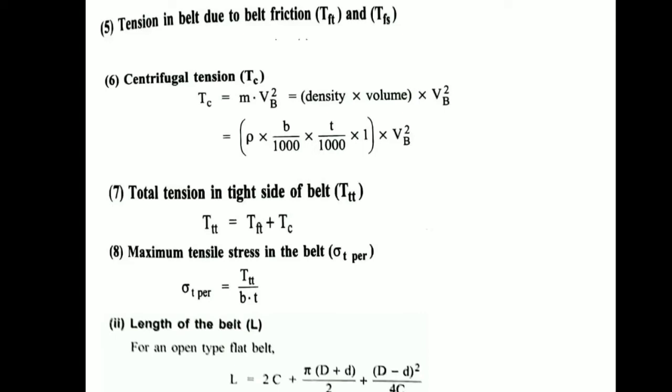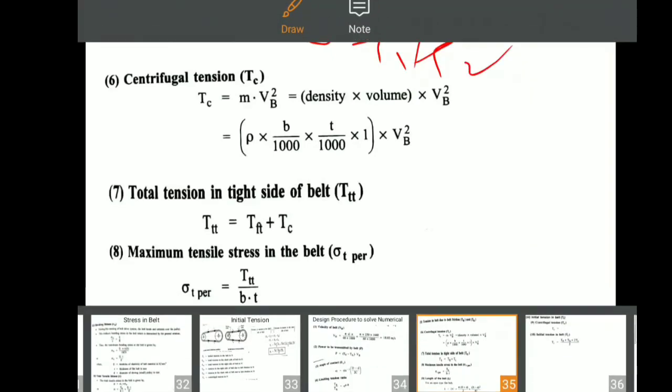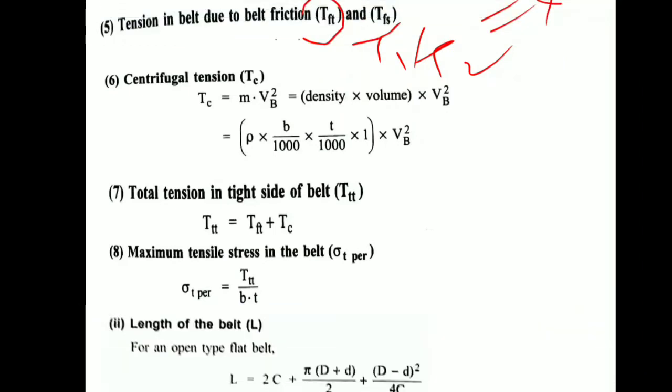So this is belt tension. Next will be the centrifugal tension which we have seen: Tc equals m×V². V means velocity of belt, that is π×d×n divided by 60×10³. M is the mass, so now mass is converted into density times volume.